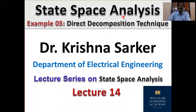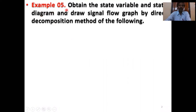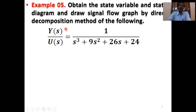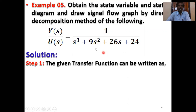Our topic is State Space Analysis, Example 5. Obtain the state variables, state diagram, and draw signal flow graph by Direct Decomposition Method of the following. From this transfer function, calculate the state matrix, state equations, state diagram, signal flow graph, and determine the stability of the system.